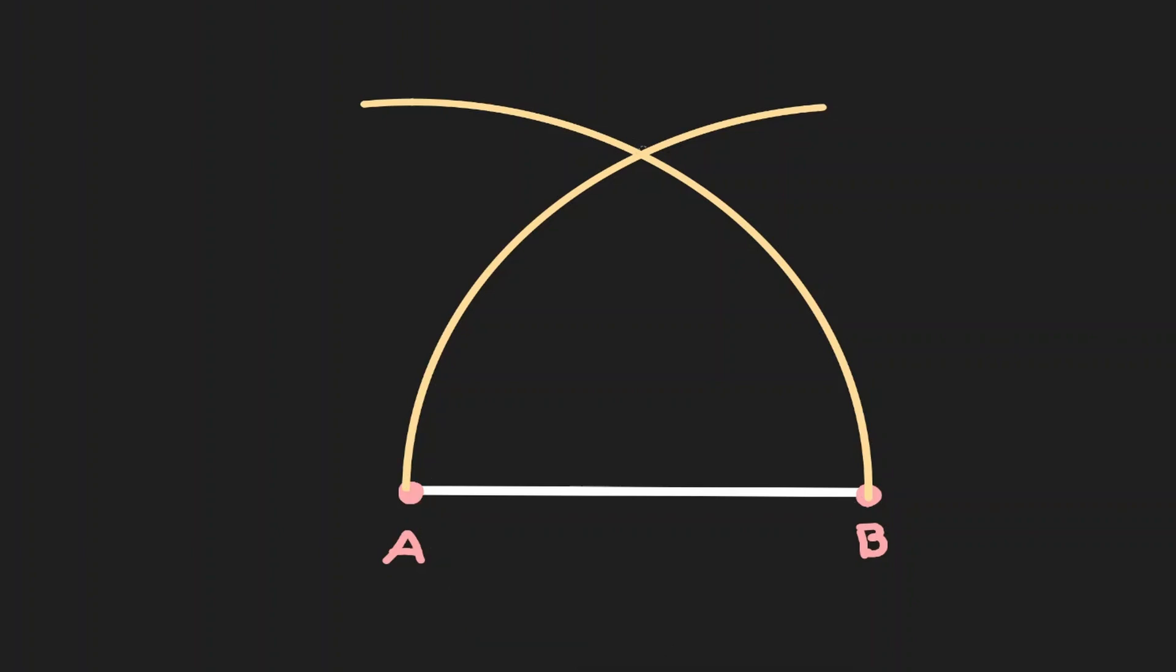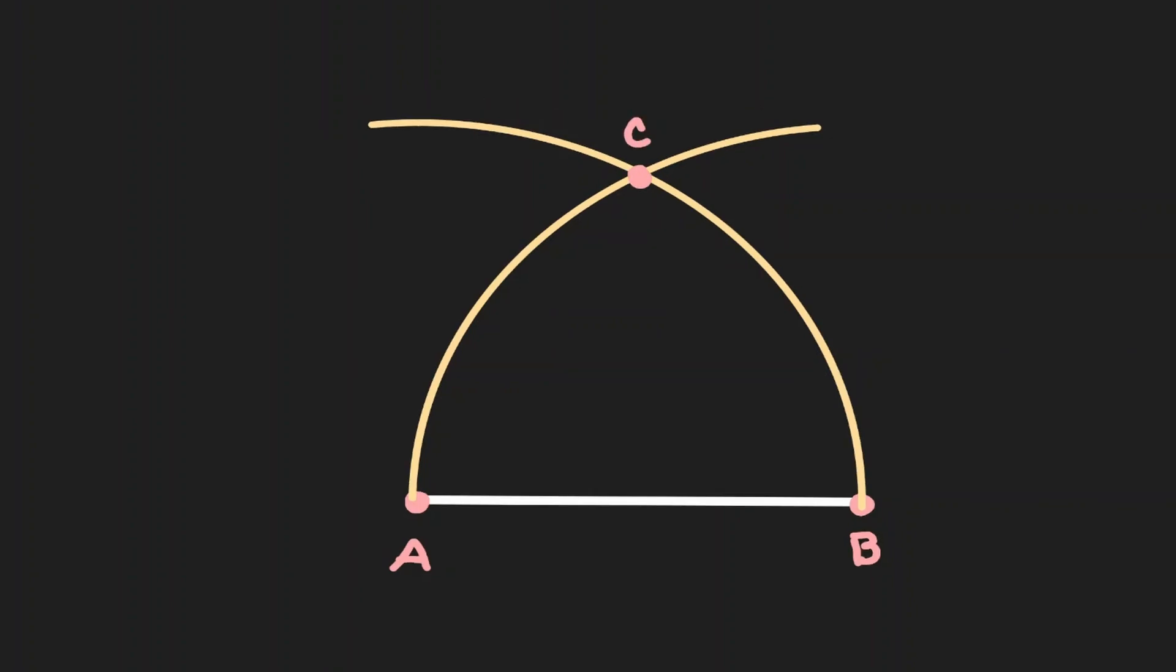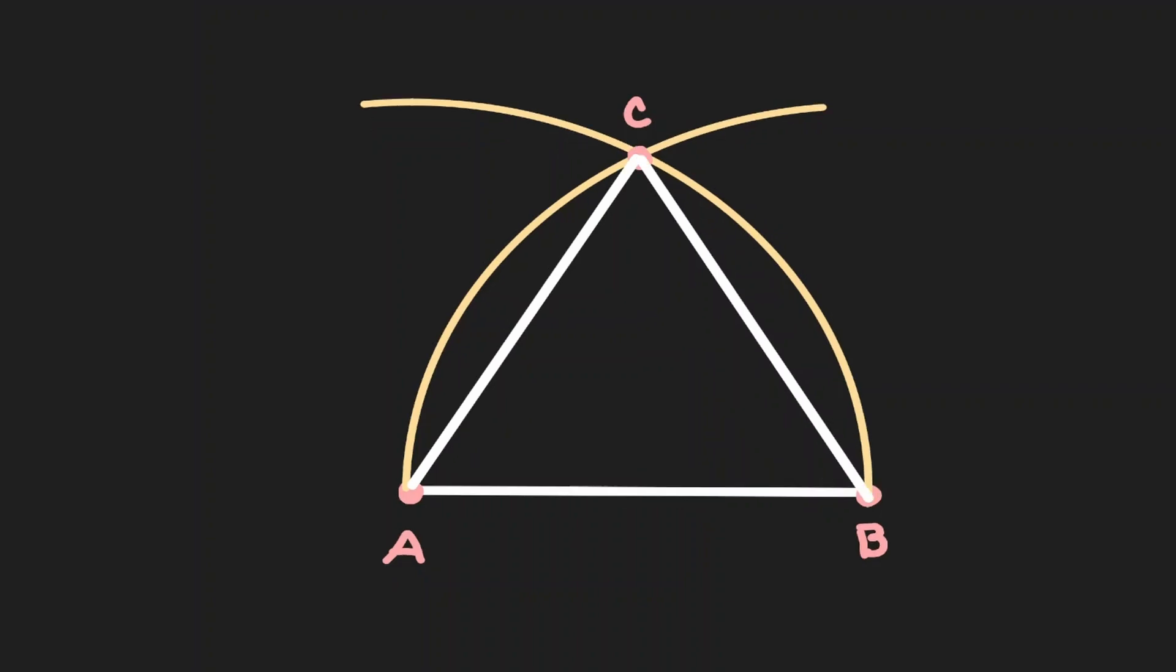Because if I consider this intersection, let's call it point C, and I connect those three points, I am going to create a triangle and it is guaranteed to be an equilateral triangle, our triangle ABC.